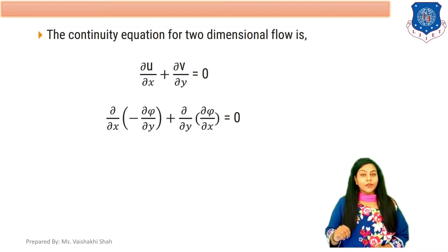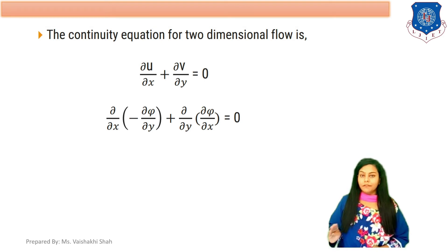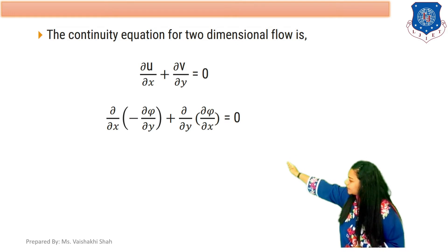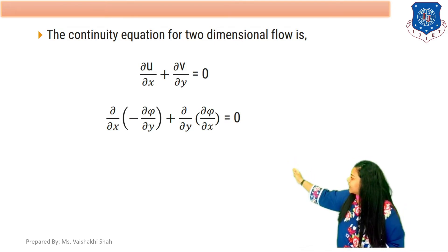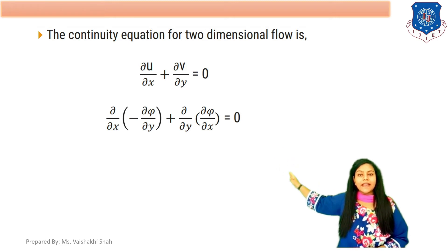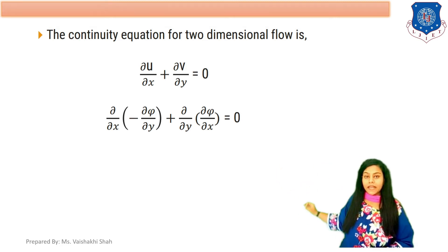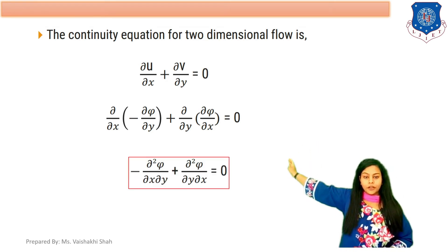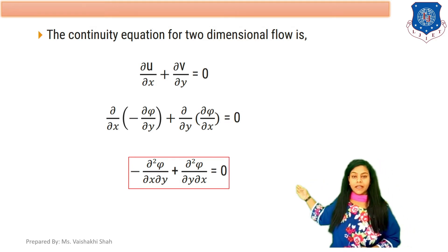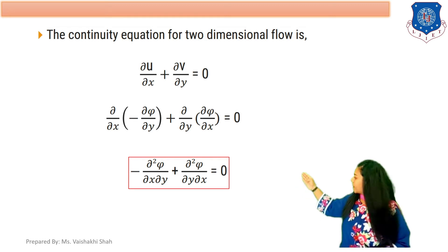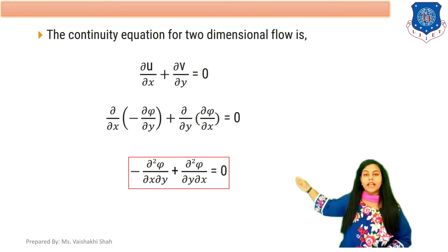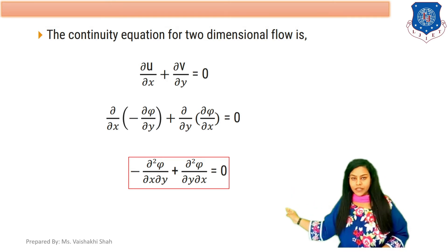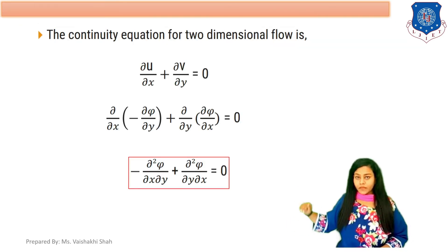We place the equations for u and v into the continuity equation. Substituting u equals minus del psi by del y and v equals del psi by del x, the equation becomes: minus del squared psi upon del x del y plus del squared psi upon del y del x equals to 0. We derive this equation for stream function.